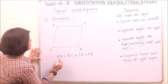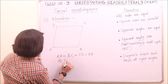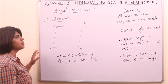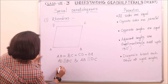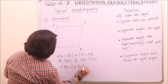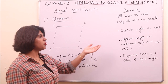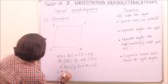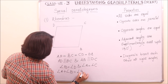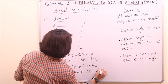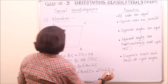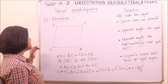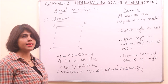So opposite sides are parallel: AD parallel to BC, and AB parallel to DC. Opposite angles are equal: angle B equals angle D, and angle A equals angle C. Adjacent angles are supplementary, meaning they add up to 180 degrees: angle A plus angle B equals angle B plus angle C equals angle C plus angle D equals angle D plus angle A equals 180 degrees.